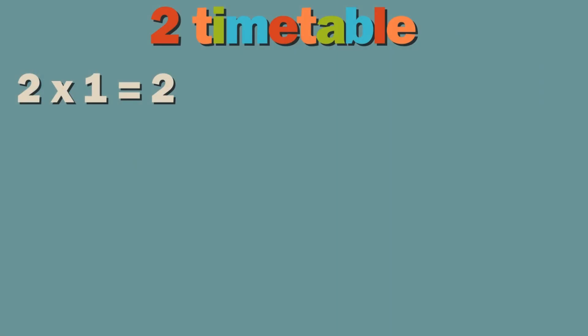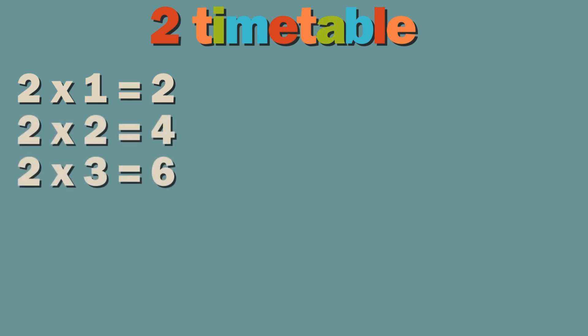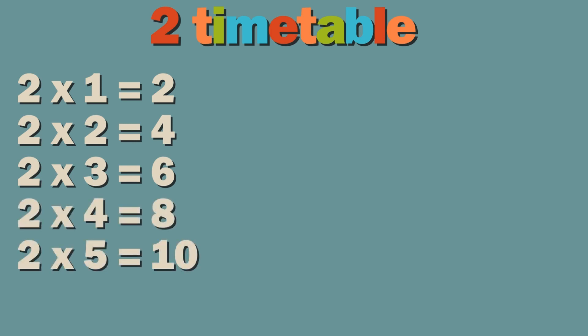Two times one equals two. Two times two equals four. Two times three equals six. Two times four equals eight. Two times five equals ten.